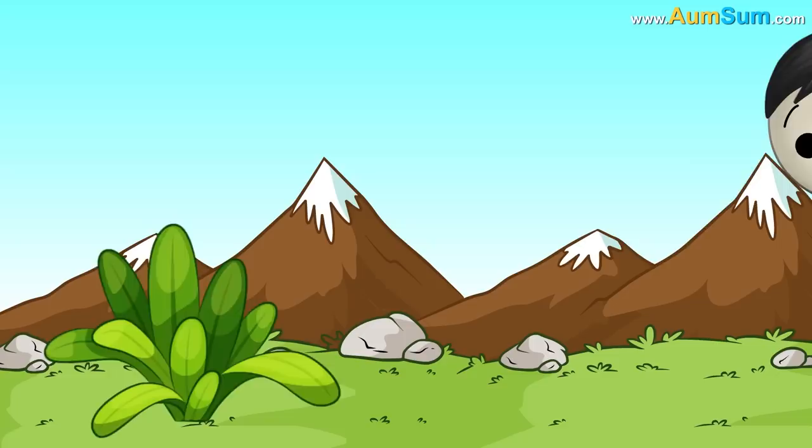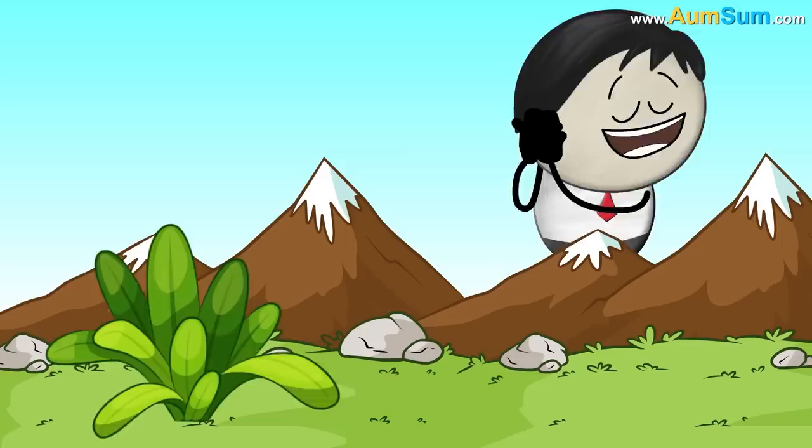It's AumSum Time. Why is grass green? Because green grass, blue sky and brown mountains look great together. No.